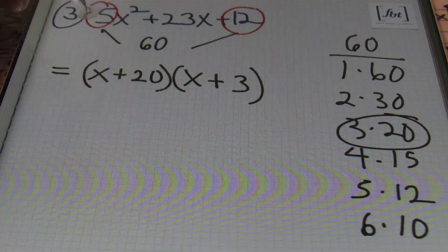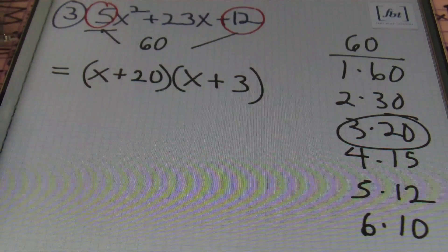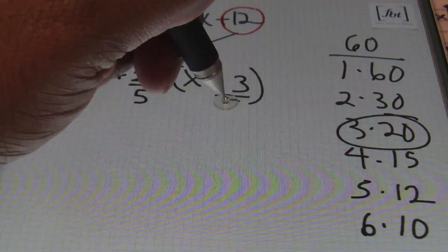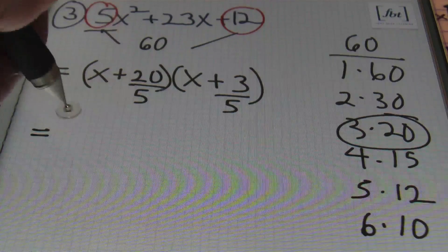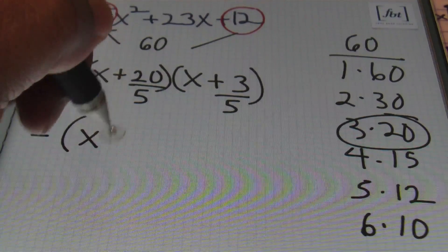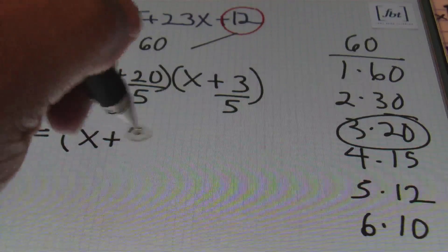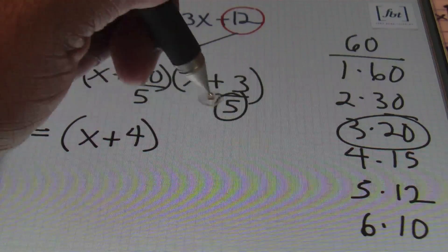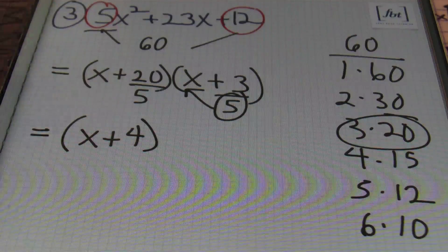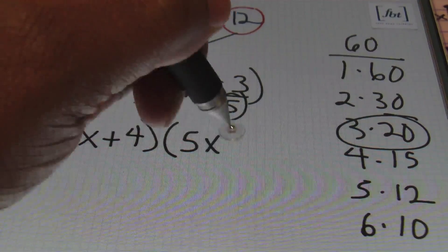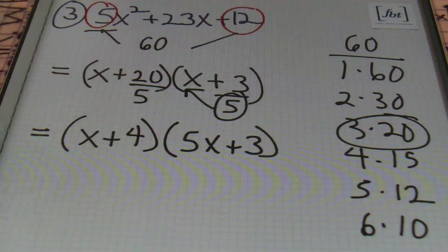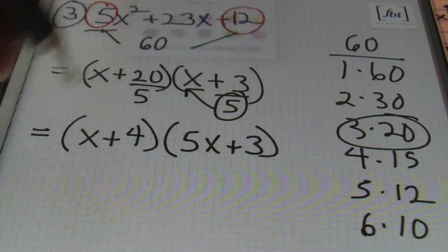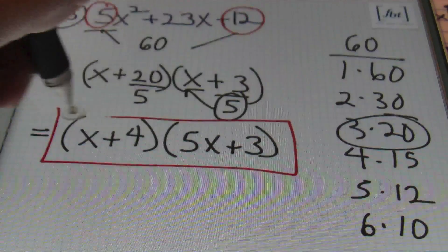The first coefficient was 5, so I'll be dividing both of these values by 5. Simplifying: bring down x, plus 20 divided by 5 is 4. Since 3 and 5 can't be simplified further, place the denominator 5 in front of the variable x, giving a binomial that reads 5x plus 3. And that's your answer.